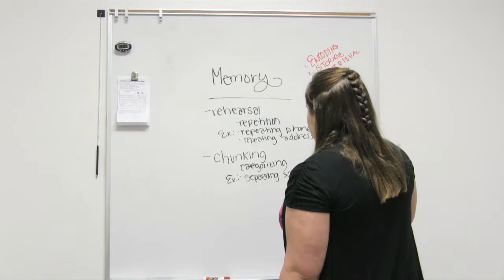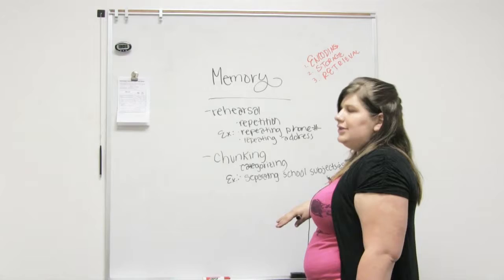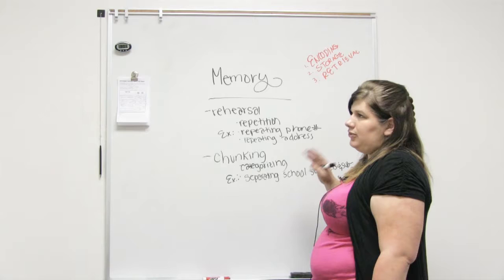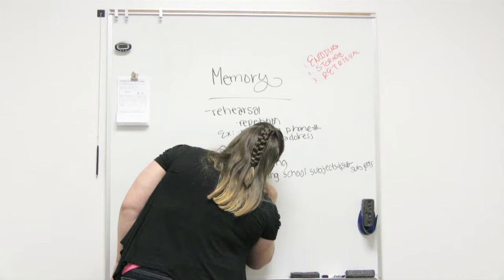An example I like to use — because I actually use this in my everyday life — is I categorize my grocery list. If I just get called and told we need certain things, I'm going to say, okay, I'm going to find eggs and milk in the dairy section, and I'm going to find chicken and beef in the meat section, and I'm going to find soup and rice in the aisles.